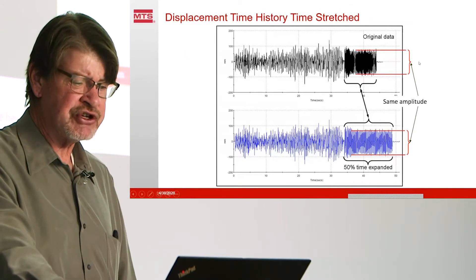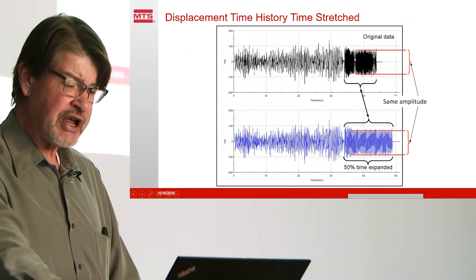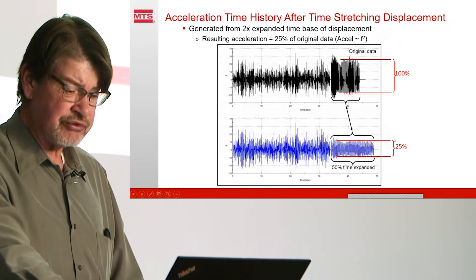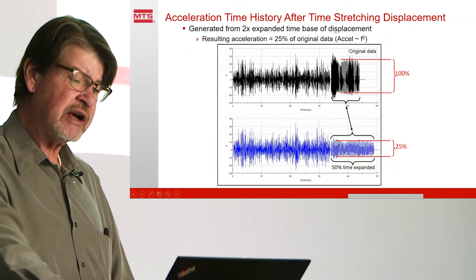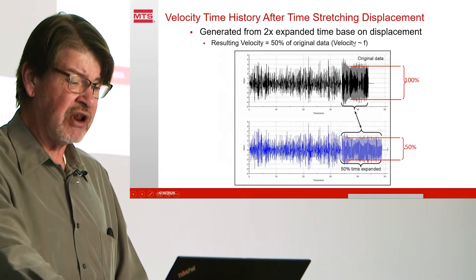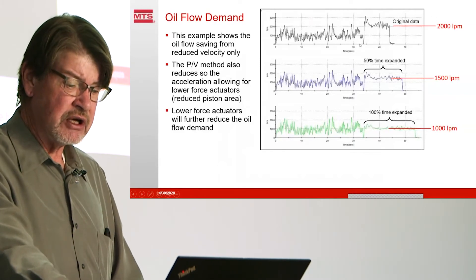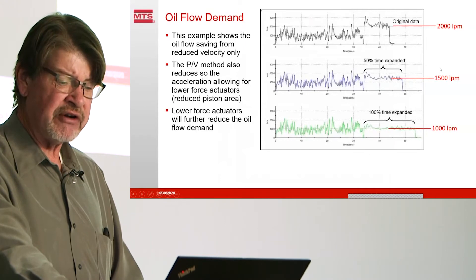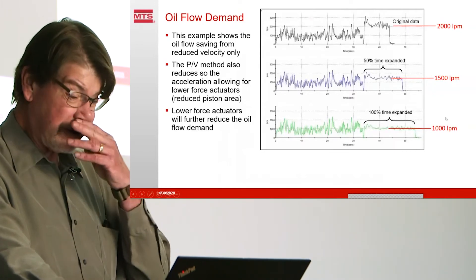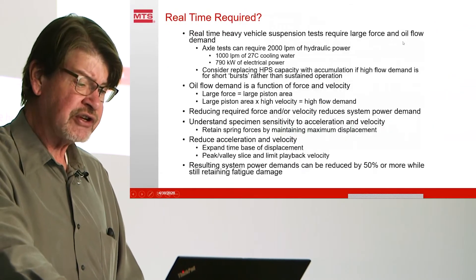If we look at a displacement time history stretched out, here's the original data played in real time, then 50% time expanded for just that section. Looking at accelerations — the original acceleration is down to 25% by doubling the amount of time, because frequency squared is our acceleration sensitivity. Velocity is down by 50% because velocity is directly proportional to frequency. Our original data required 2,000 liters a minute. The 50% time-expanded data only required 1,500 liters a minute from the HPU, and by doubling the time with a 100% expansion we go down to 1,000 liters a minute. This clearly shows the effect on power demand.